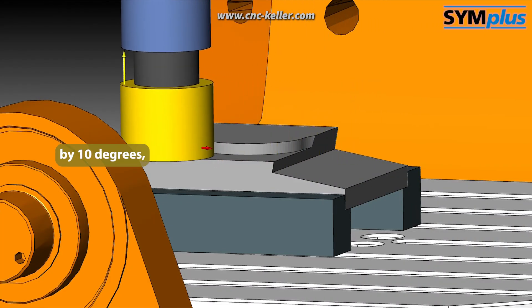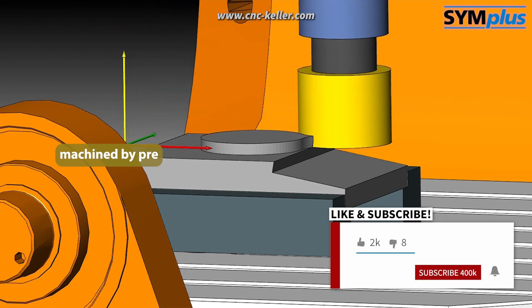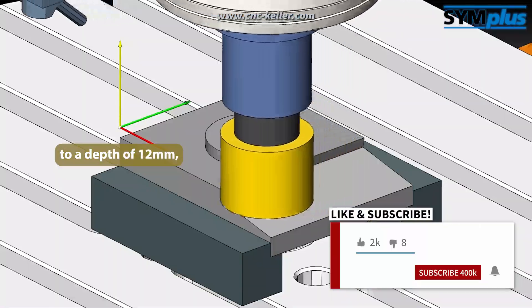The shoulder, which is inclined by 10 degrees, is then machined by pre-milling the circular tenon to a depth of 12mm.